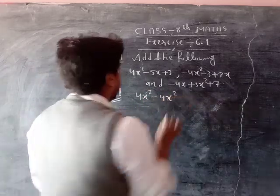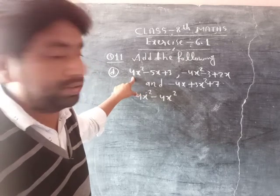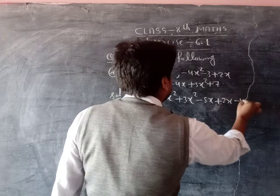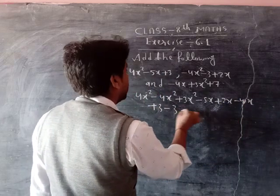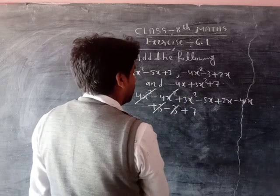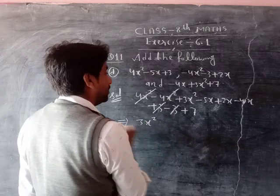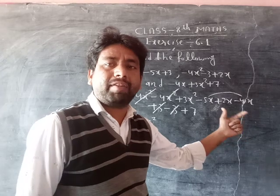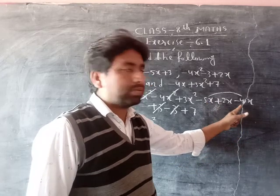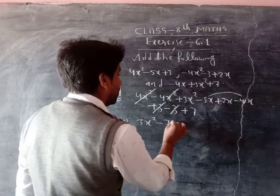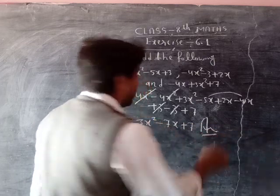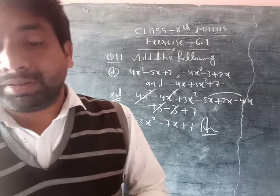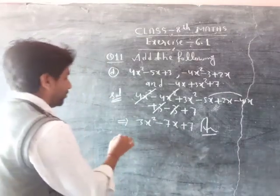Minus 4x square, minus 5x plus 3, minus 4x square minus 3 plus 2x, plus 3x square. Combining like terms: minus 5x plus 2x minus 4x gives minus 7x; plus 3 minus 3 gives zero, but answer includes plus 7. The answer is 3x square minus 7x plus 7. Now, remaining questions we have to complete.